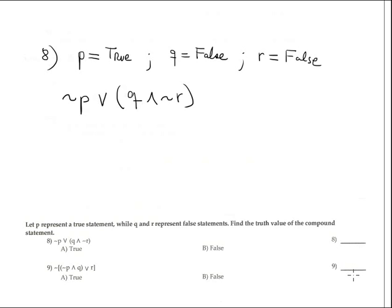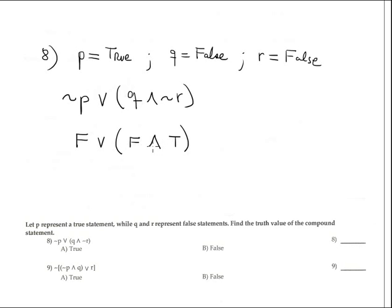Number eight: evaluate the expression given P is true, Q is false, R is false. Negation P is false. False conjunction negation R — negation R is true — gives false conjunction true, which is false. Then false disjunction false is false. The answer corresponds to option B.